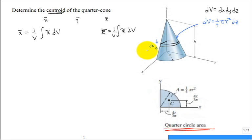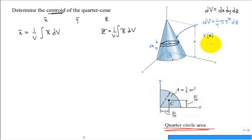Pause and think about the expression for r as a function of z. Check it: plug in z = 0 and you should get r = a, and plug in z = h and you should get r = 0. So we need r(0) = a and r(h) = 0.